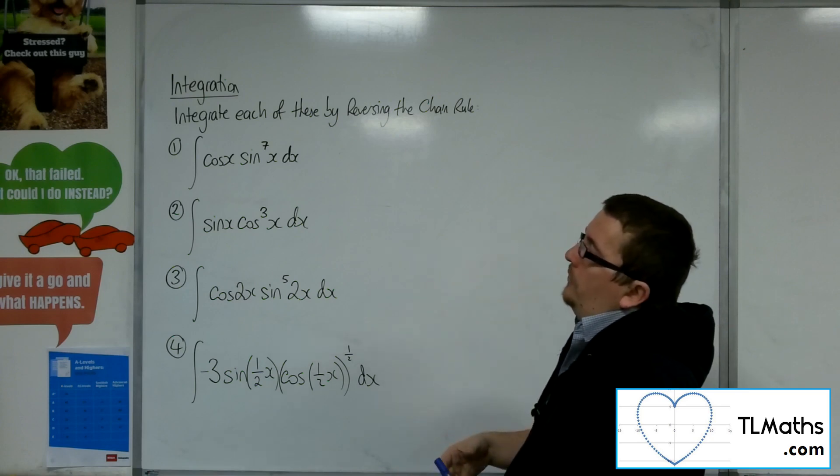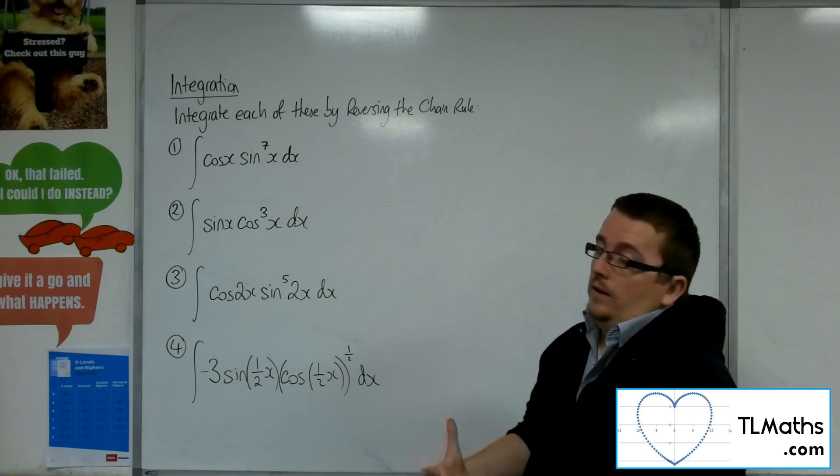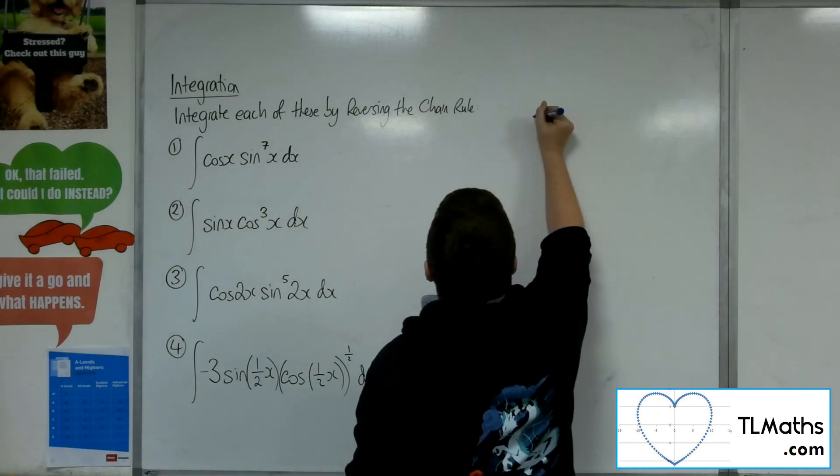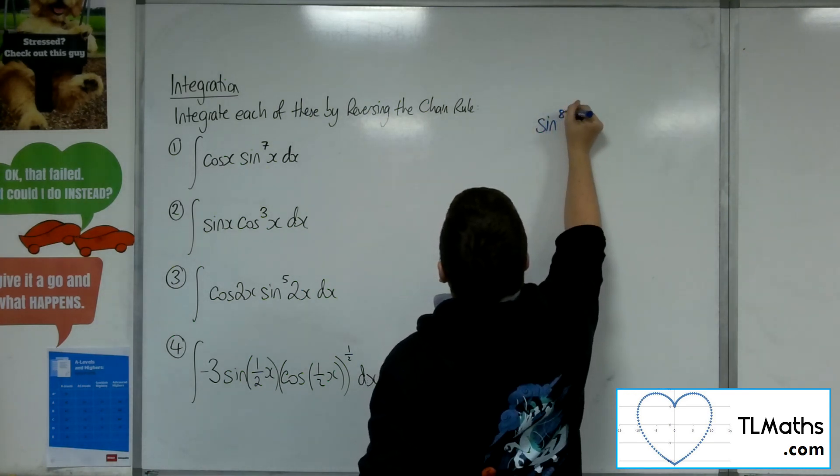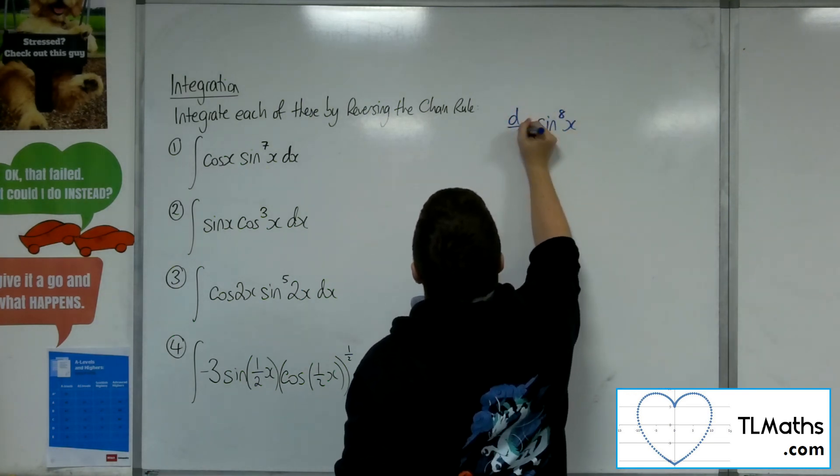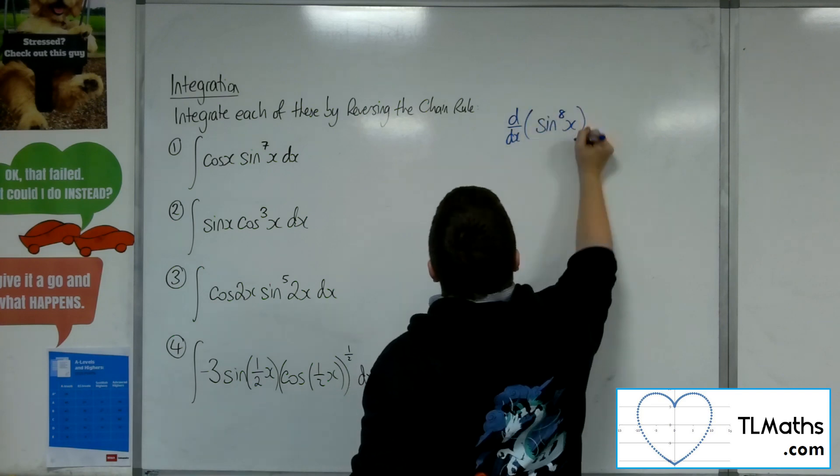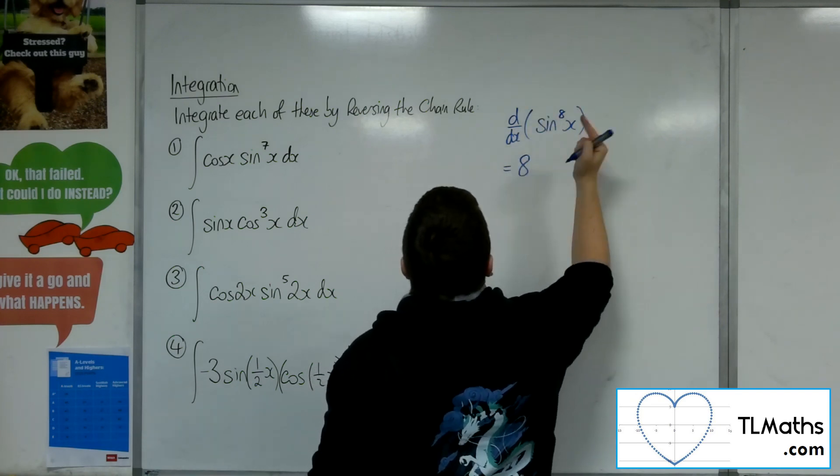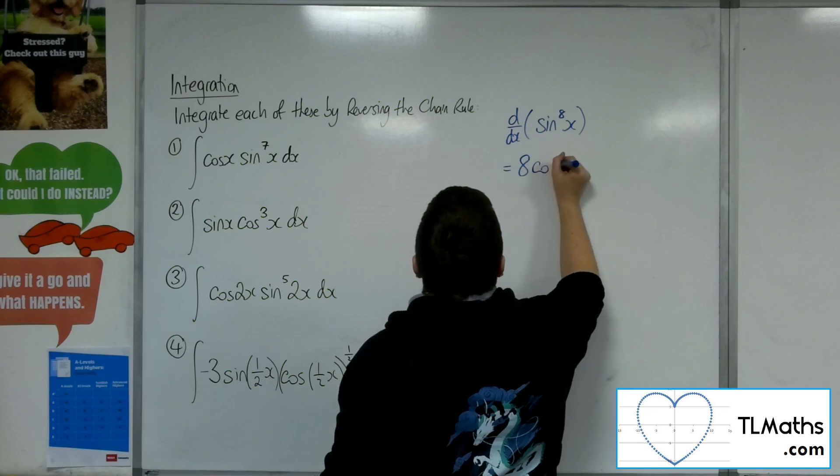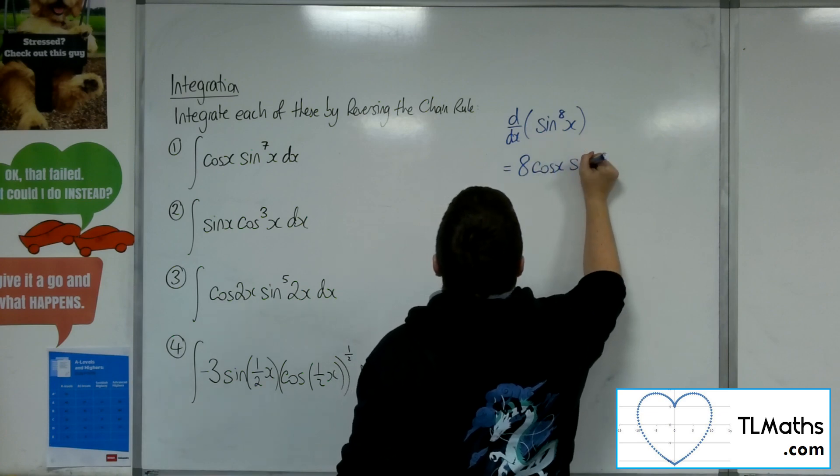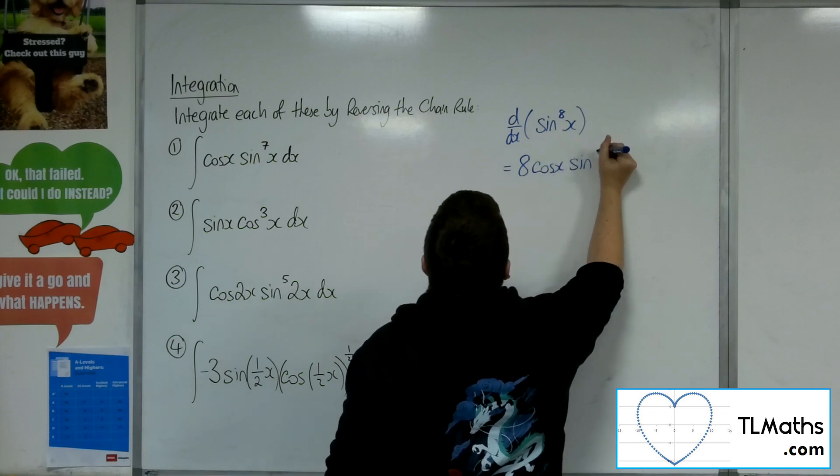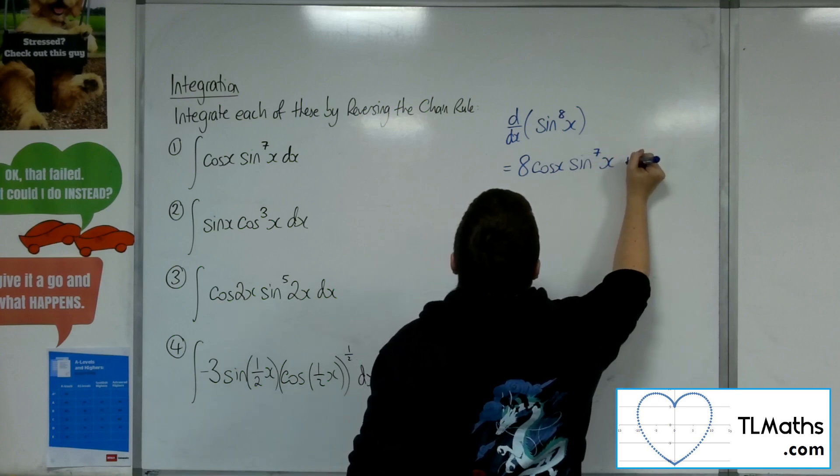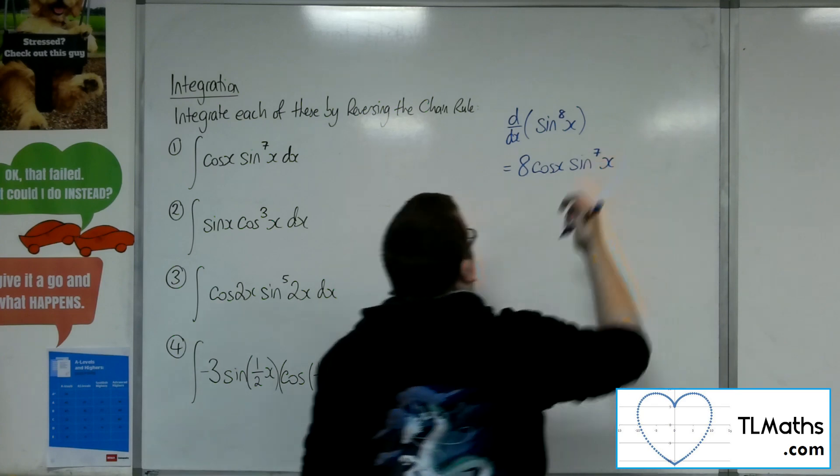The first one I've got cosine of x times sine to the 7x dx. So if I looked at sine to the 8x and I differentiated that, then I would get 8. So the 8 would come down, the derivative of what's inside is cosine x, that would come out, and I'd be left with 8 cosine of x times sine to the 7x, not plus c because I'm not integrating.